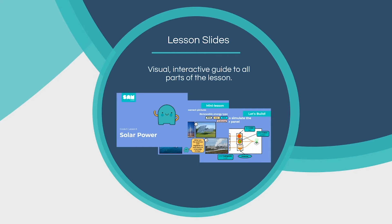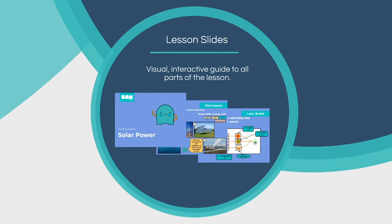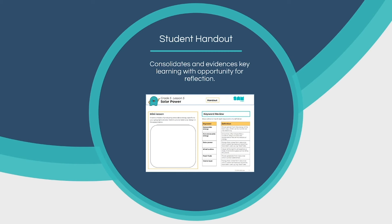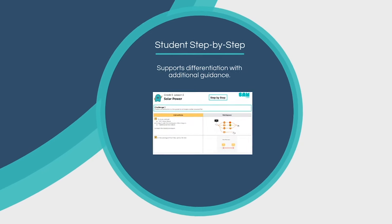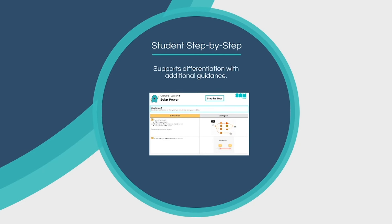Accompanying the core instruction, the student handout provides opportunity for students to consolidate, evidence, and reflect on key learning. The student step-by-step is a support resource which can be printed out for students, providing added guidance through each step of the system built in the lesson.